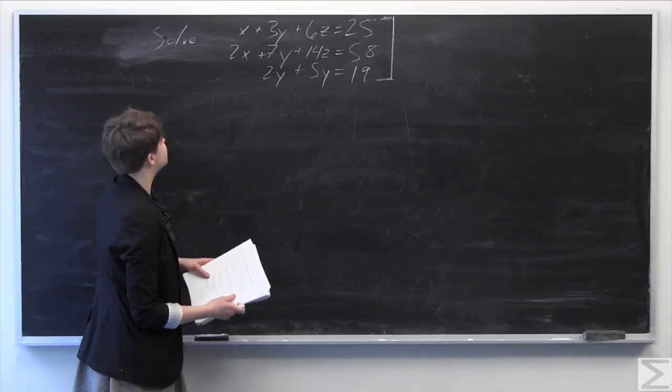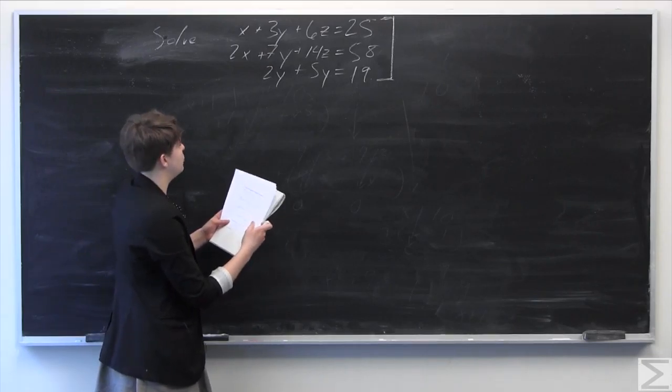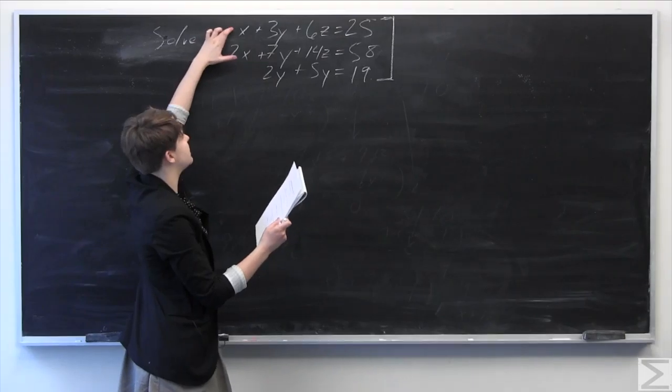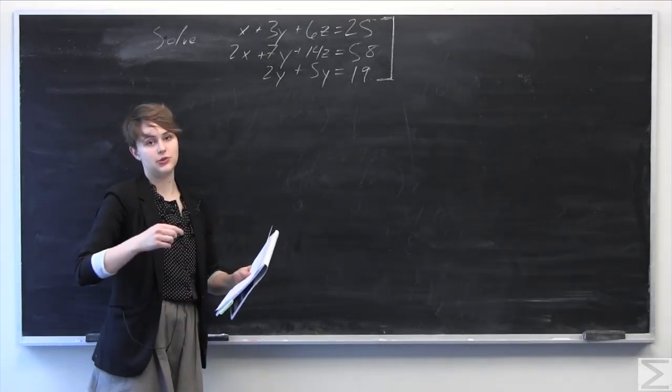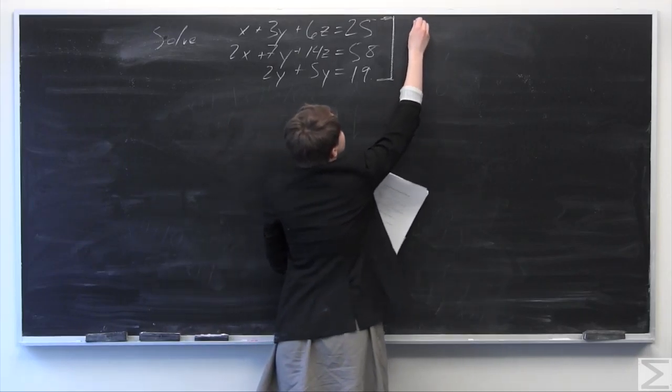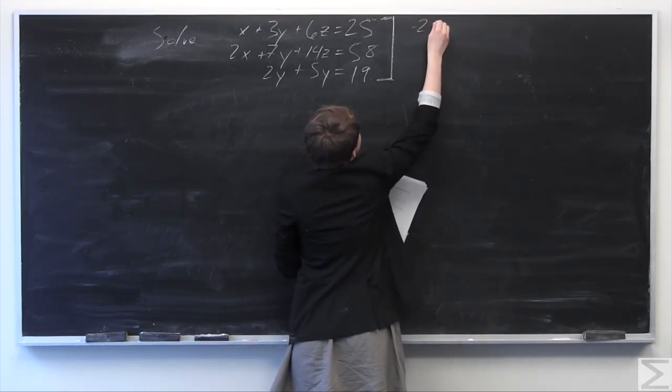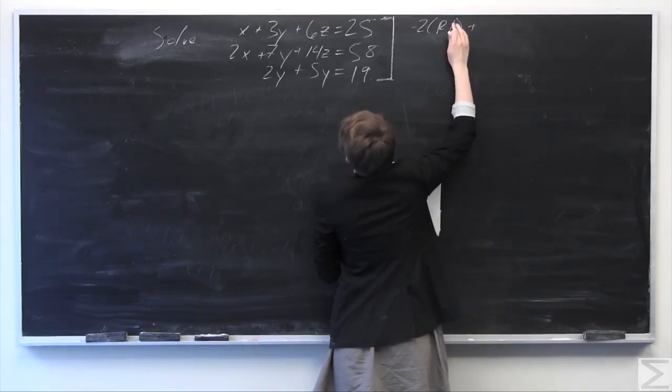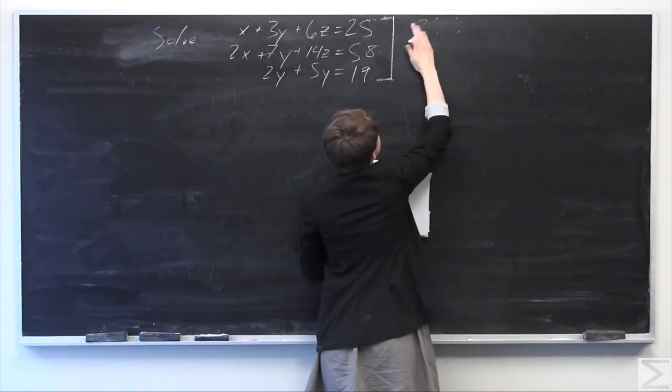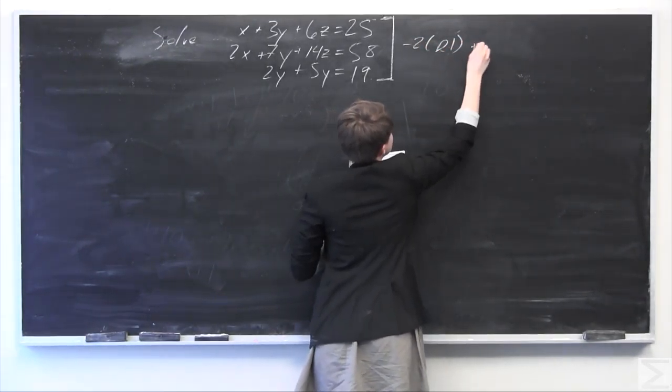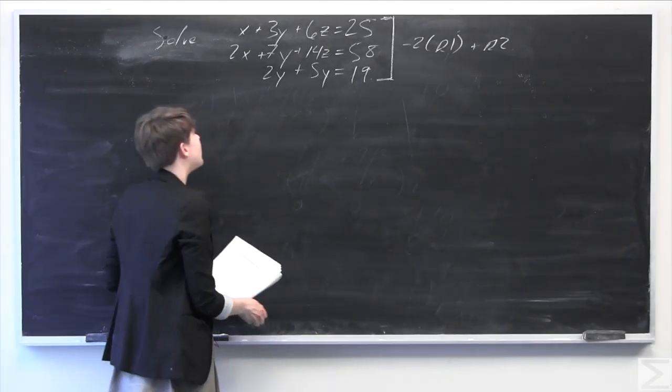First, we're going to try to get rid of the x in the top row. What we're going to do is replace the first row. We're going to do negative 2 times row 1 plus row 2, and replace row 2 with that.